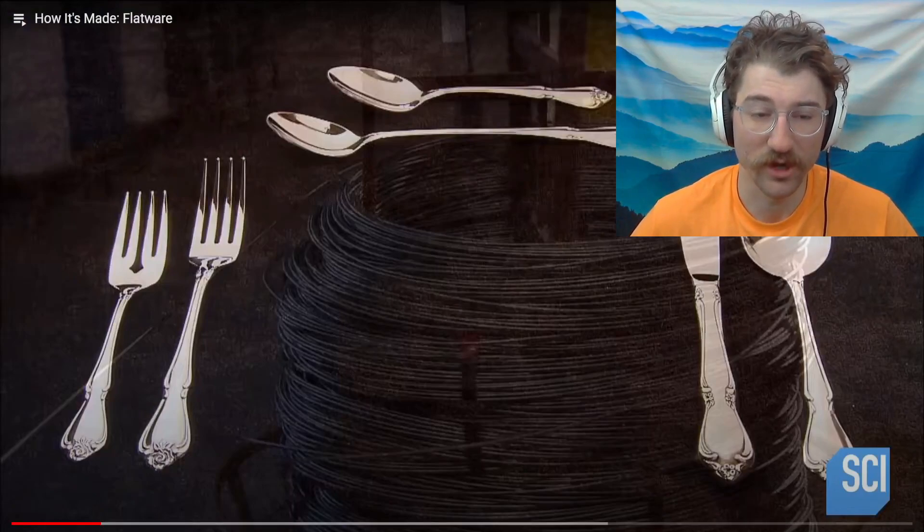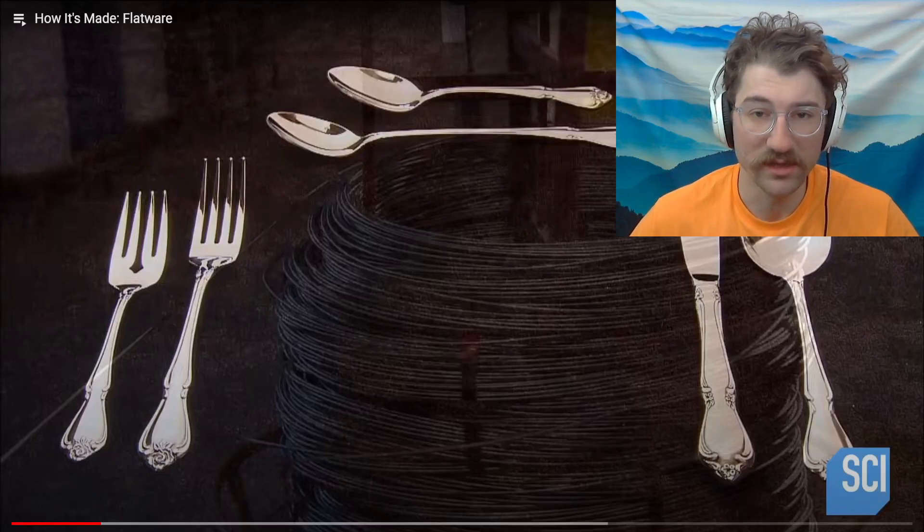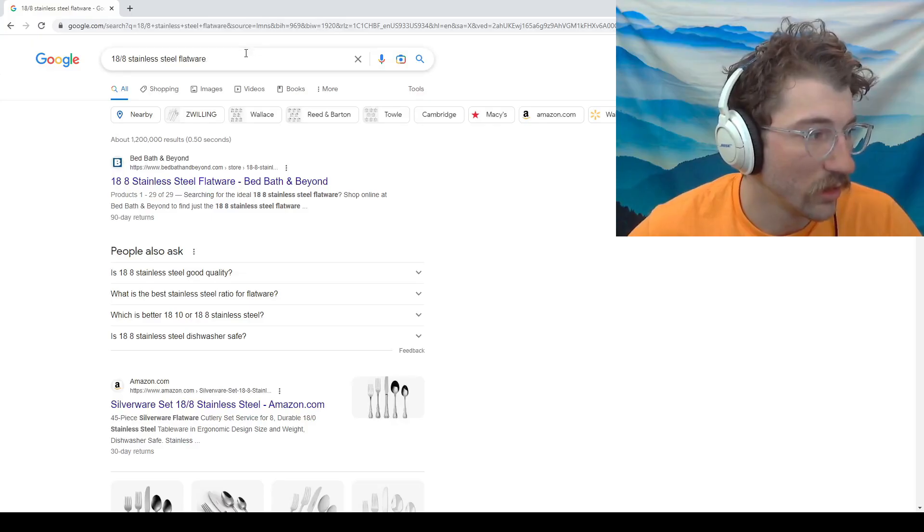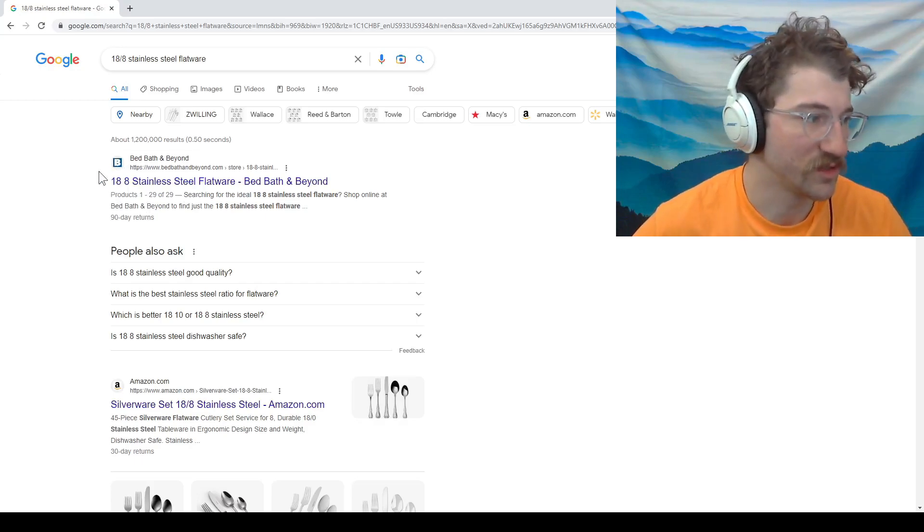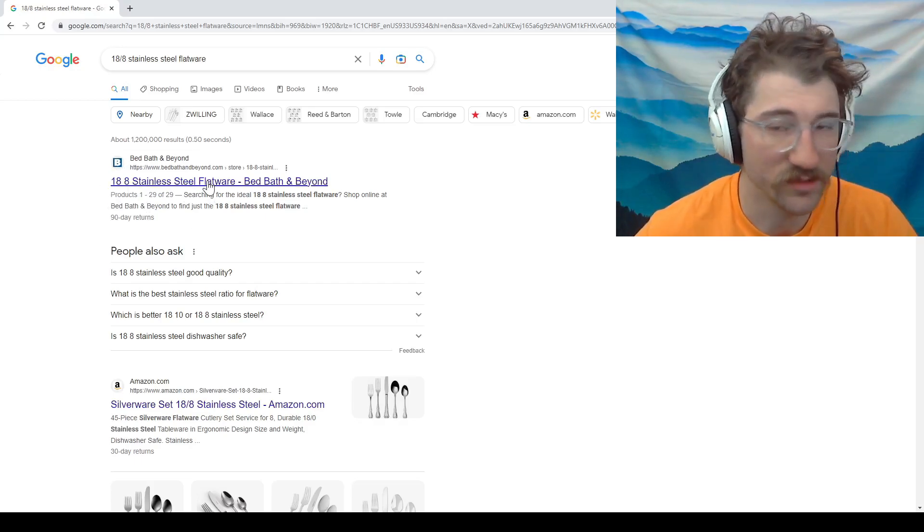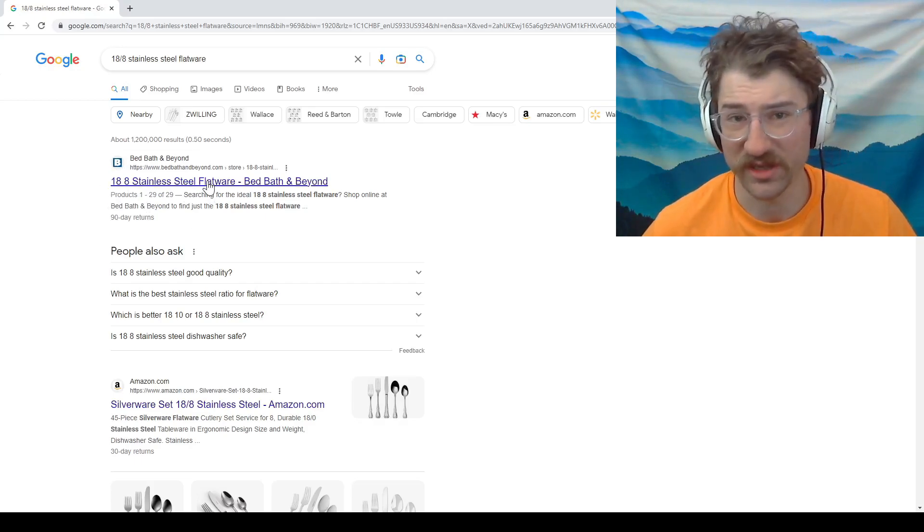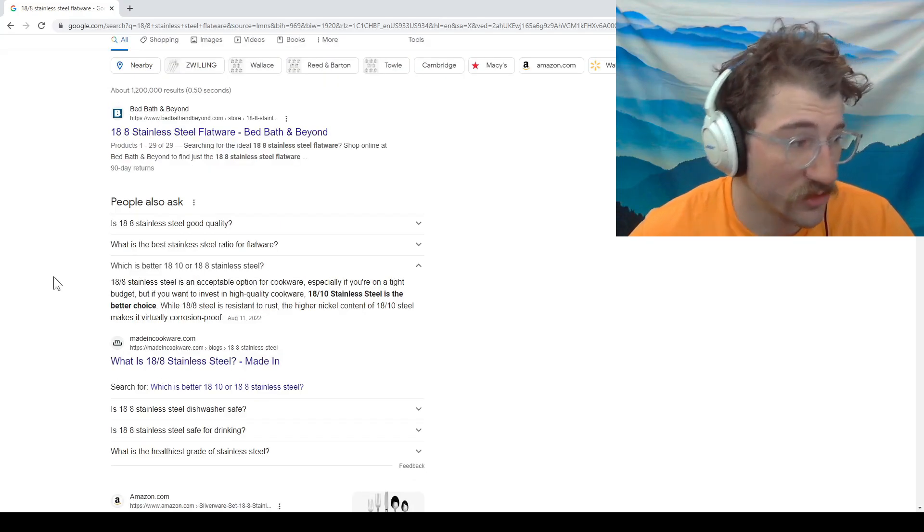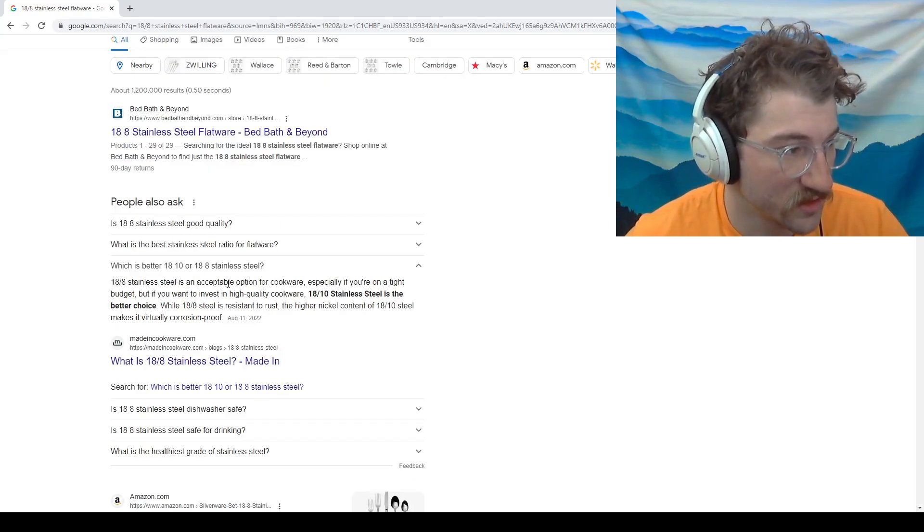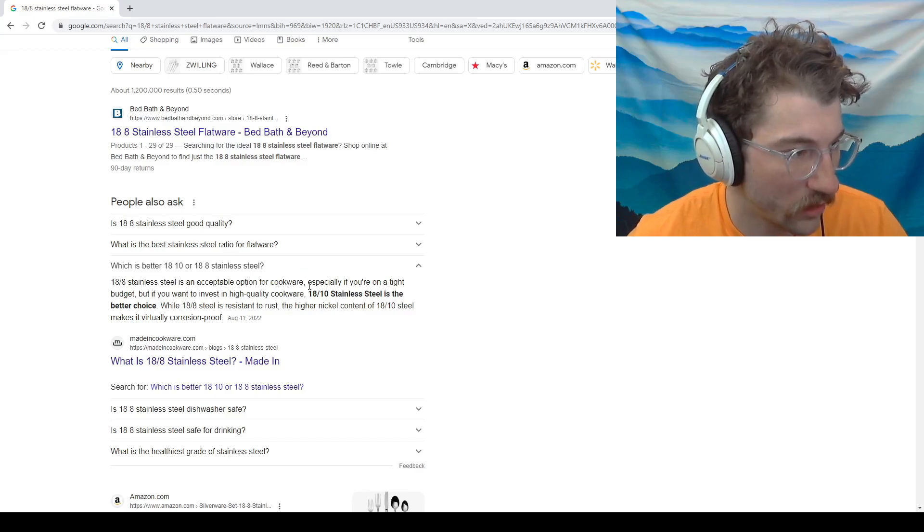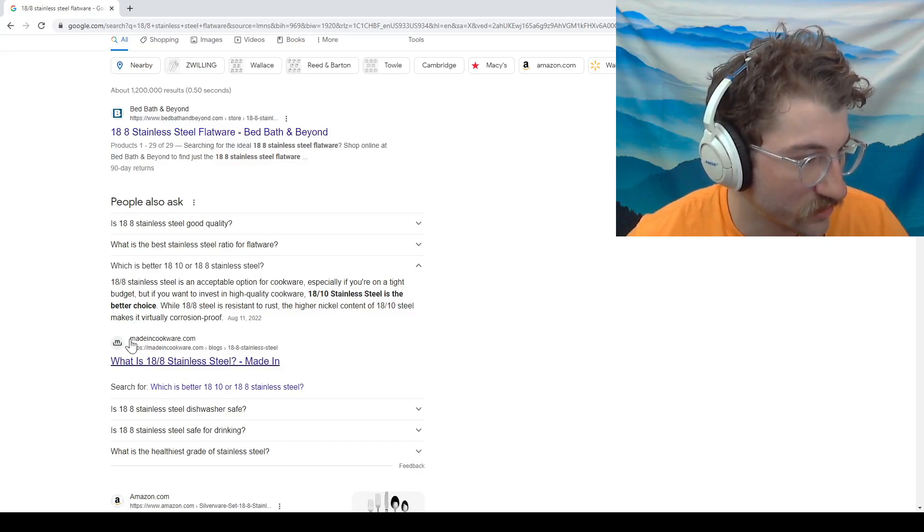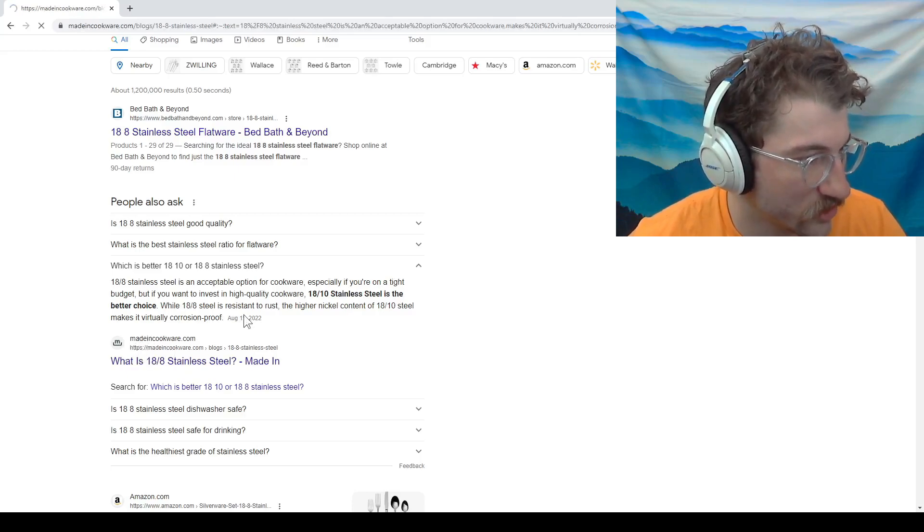So for instance, a lot of silverware is made out of 18-8 stainless, which I had to double check. 18-8 stainless steel flatware seems to be the most common, cheapest kind. 18-8 stainless steel is an acceptable option for cookware, especially if you're on a tight budget.